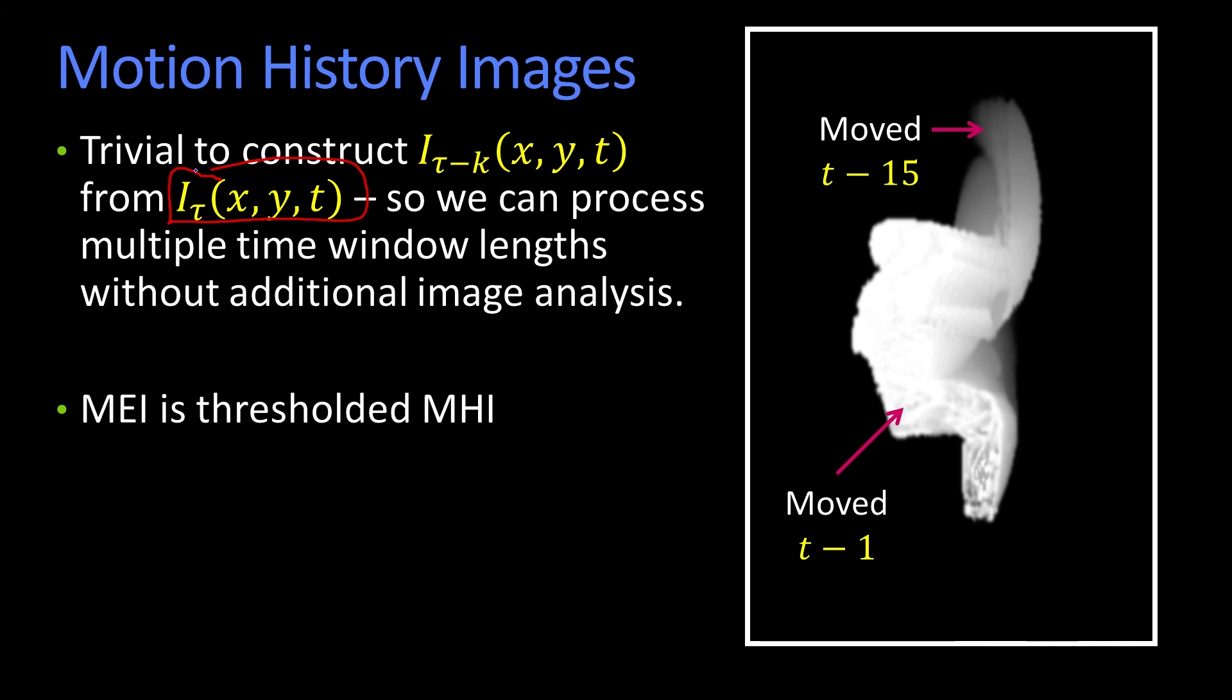And then also, as should be clear, if this is the motion history image that goes from white to dark, if I just wanted the motion energy image, where anything has changed, all I can do is just threshold that picture. Anything greater than zero, make a one, otherwise it's a zero.